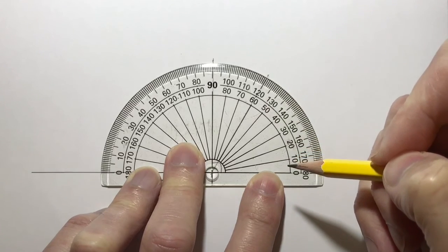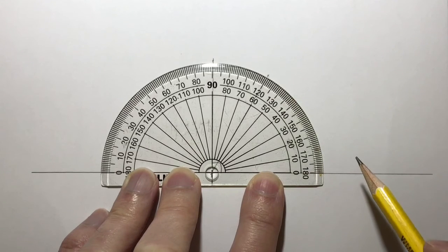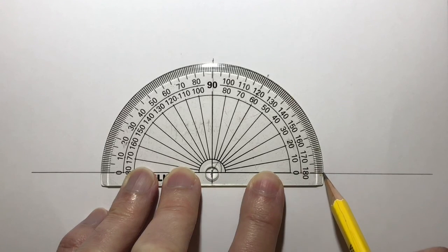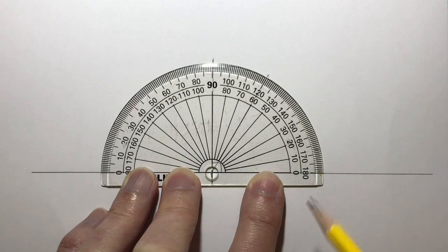We've looked at the protractor and to use it more accurately, we need to use these three points, starting in the center. Make sure the cross is on the center there. And then check that these two points are also in line. Okay, that's it.